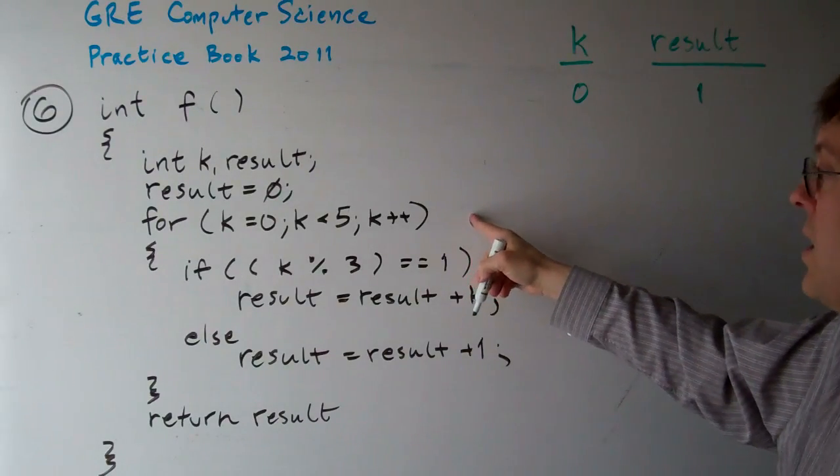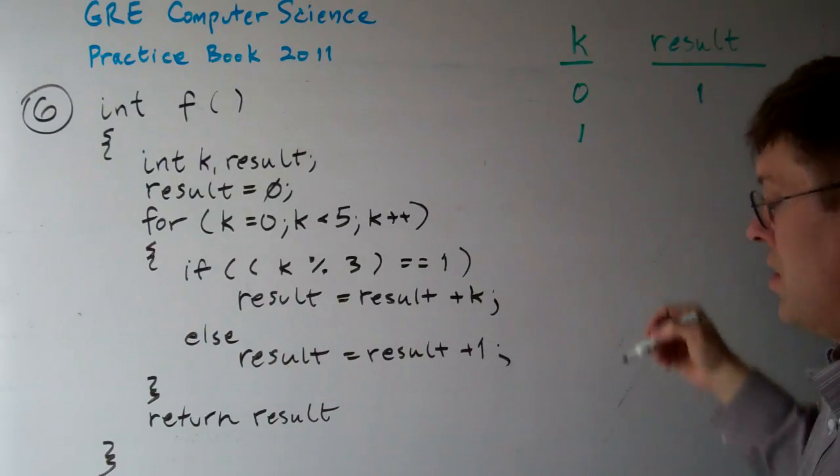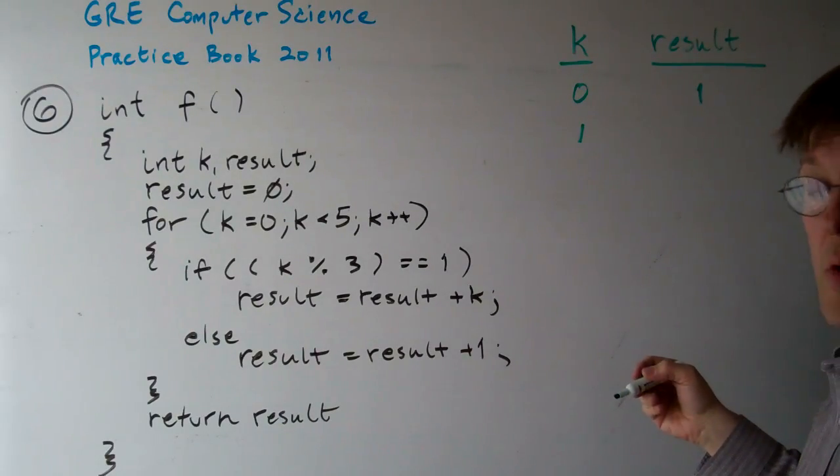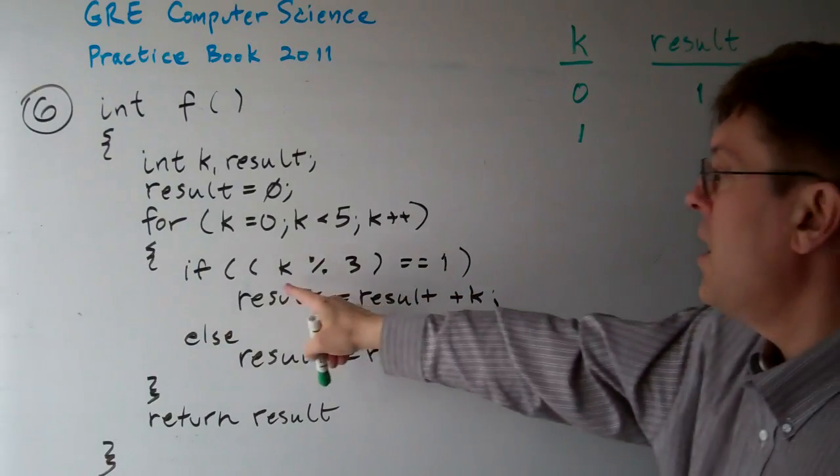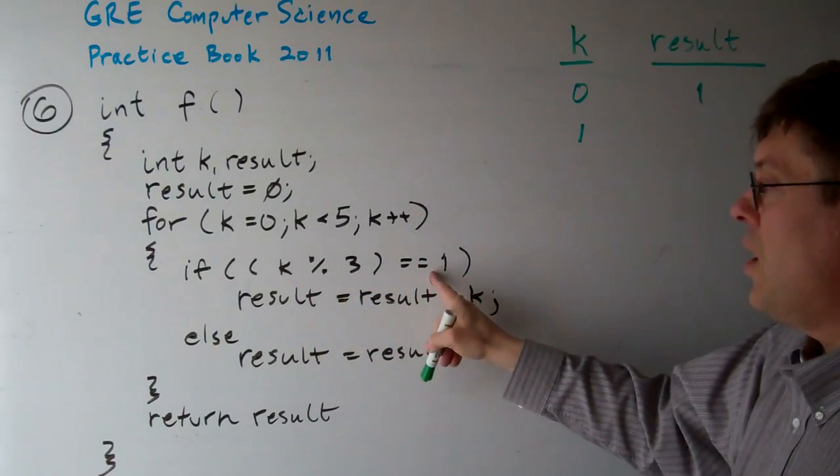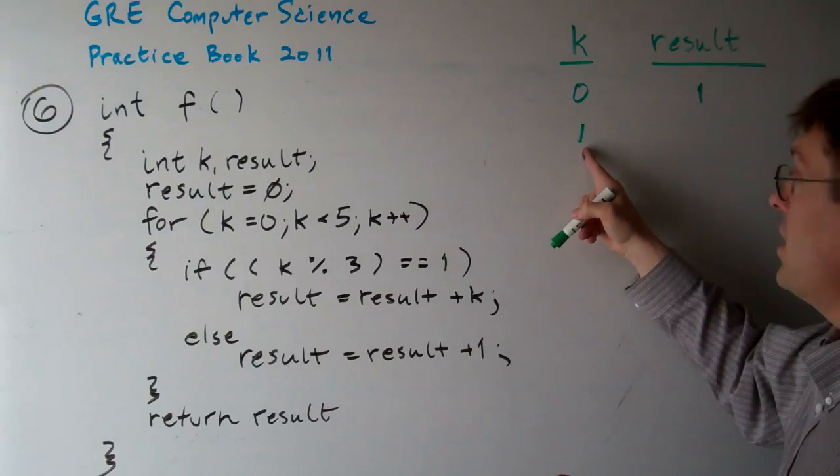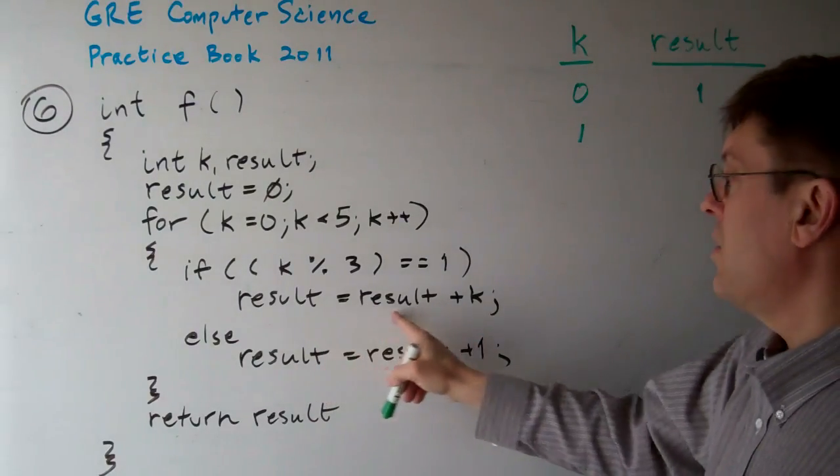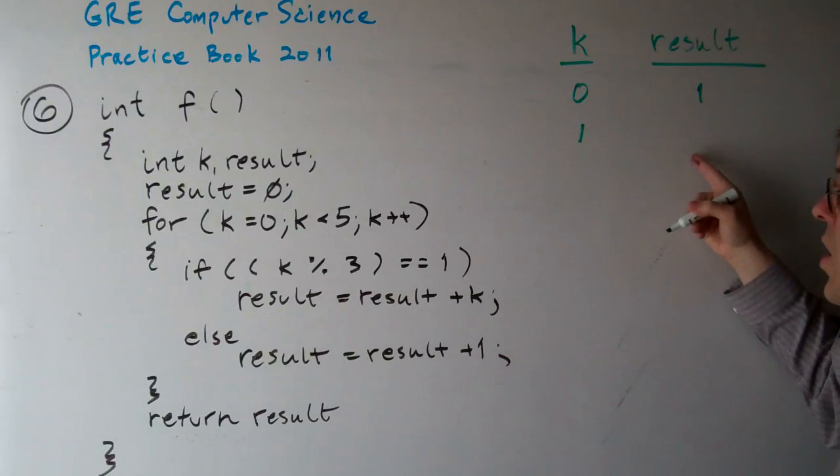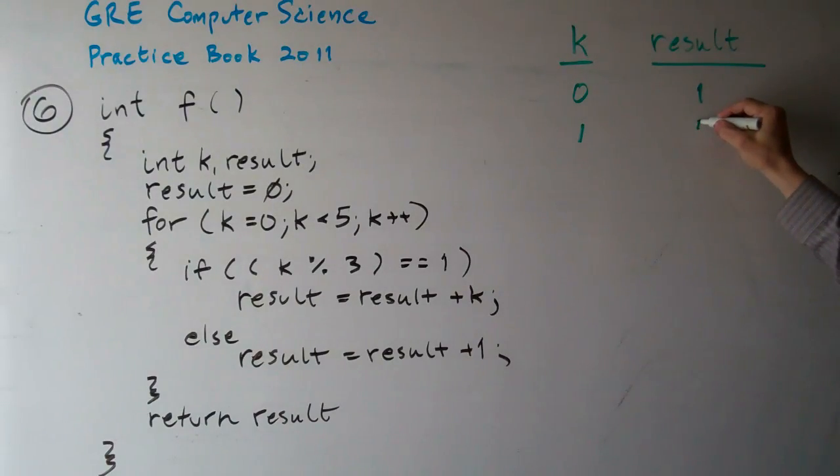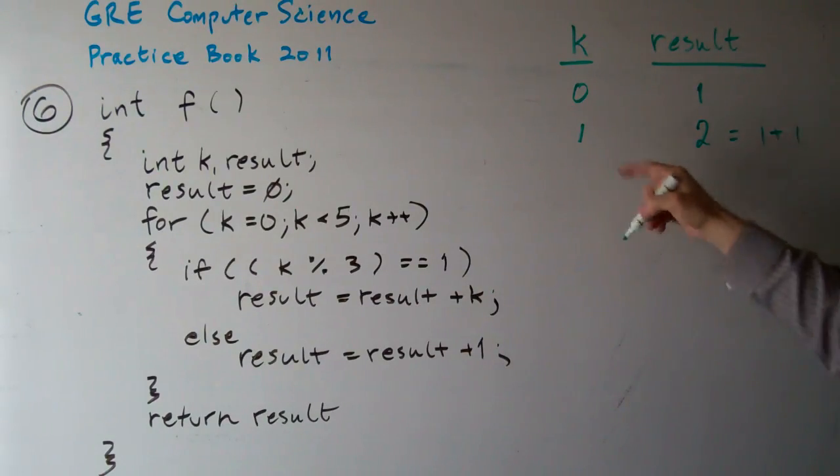We loop again. This time k equals 1. So the result is now going to be, if k mod 3 equals 1, which it does, k mod 3 is 1. The result is going to be result plus k. Well, k is already 1, so it's going to be 2, which is basically 1 plus 1, 1 plus k.